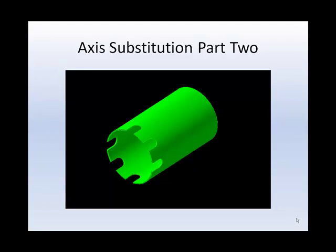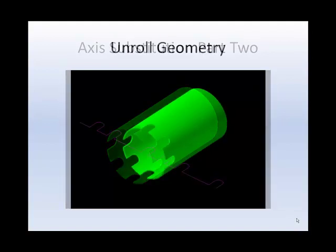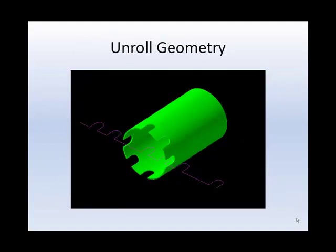We'll cut the geometry around the perimeter of the face of the cylinder using Axis Substitution. Select X-Form, Roll, and set your chaining method to 3D.